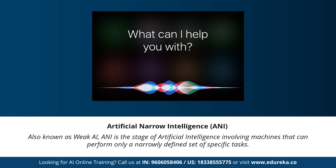Artificial narrow intelligence, also known as weak AI, is the stage of artificial intelligence that involves machines that can perform only a narrowly defined set of specific tasks. At this stage, machines don't possess any thinking ability — they just perform a set of predefined functions. Examples of weak AI include Siri, Alexa, AlphaGo, Sophia, and self-driving cars. Almost all AI-based systems built to date fall under the category of weak AI.